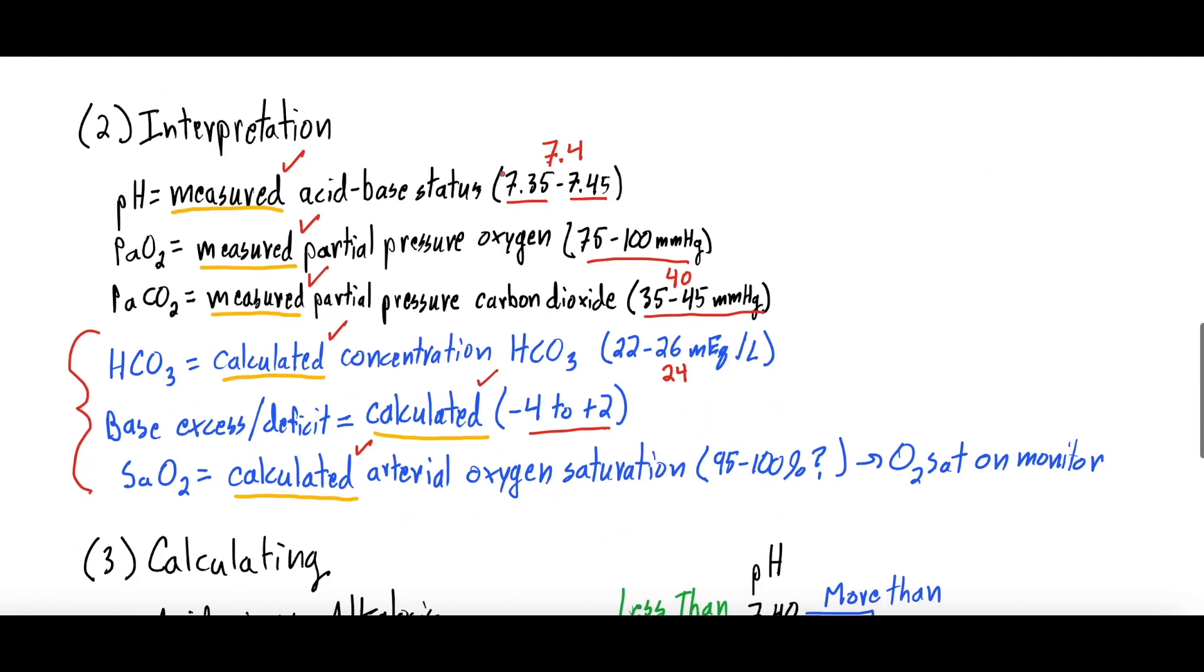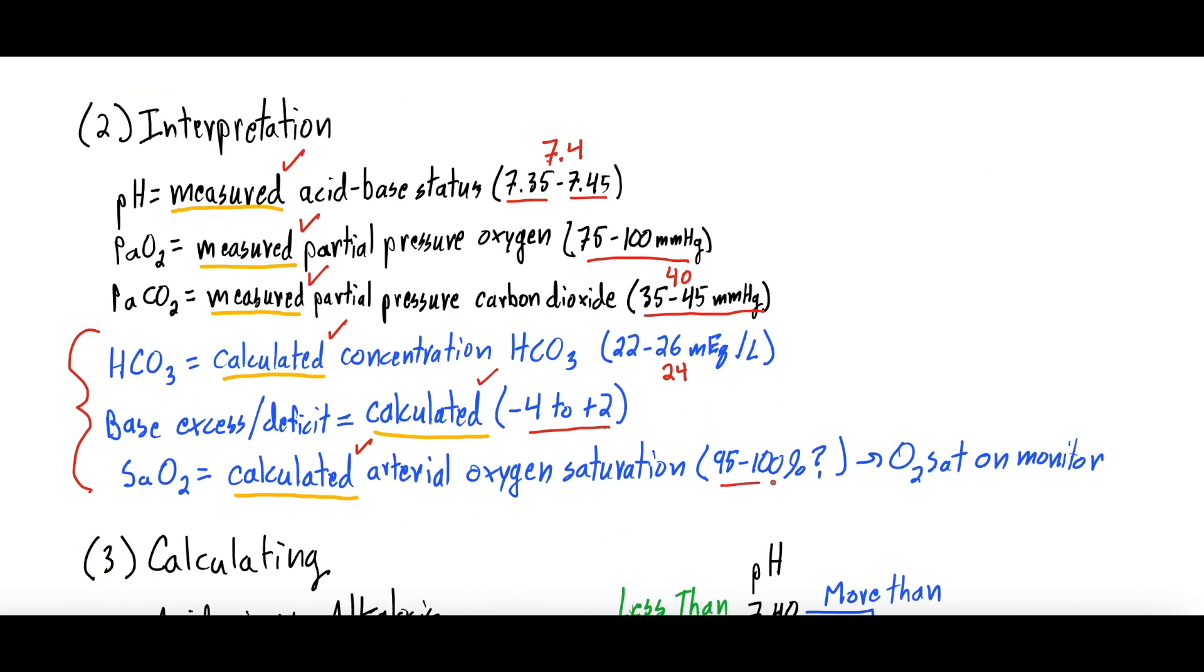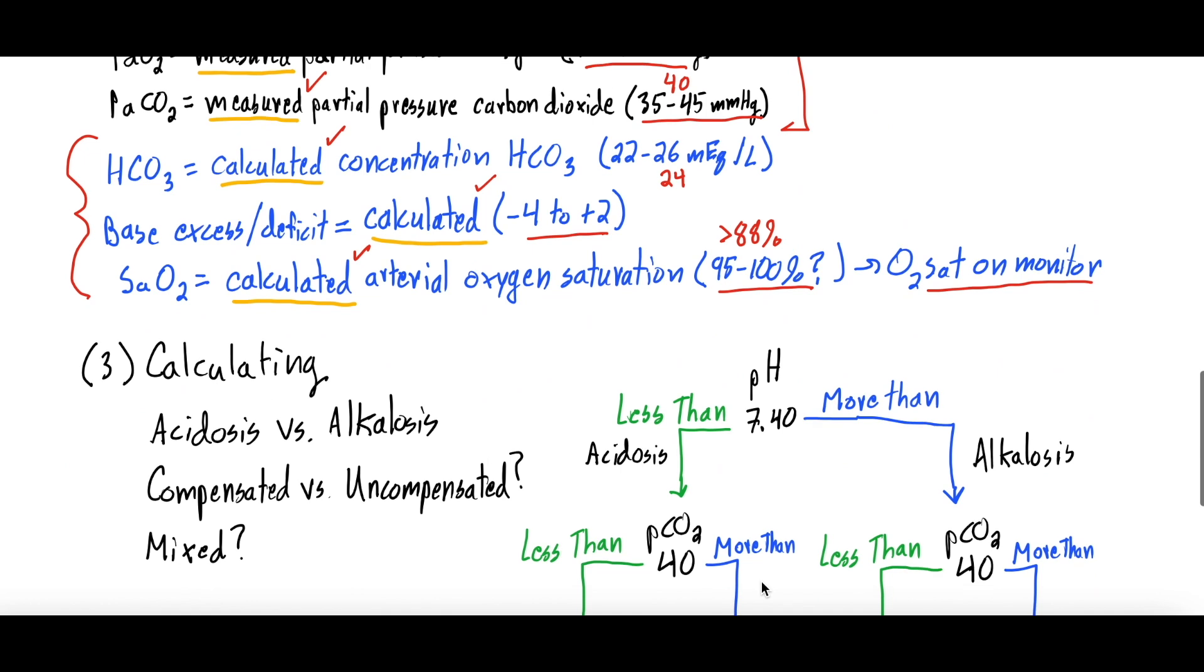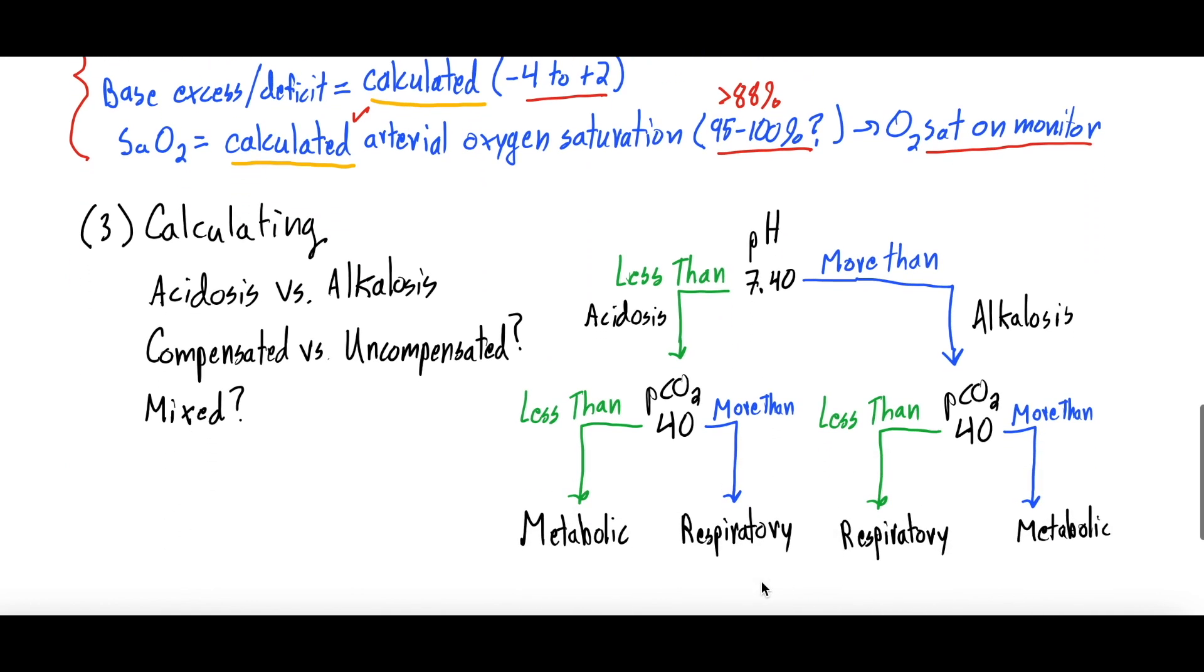And they put the normal in a lot of references is 95 to 100, although people with COPD and stuff, kind of greater than 88 can be considered normal. And this should correlate with the oxygen saturation that you see on the actual monitor. All right, so these are all calculated values whereas these are measured values. So these are the much more important values that we look at because they're directly measured from the blood gas.